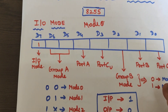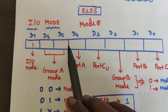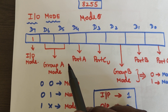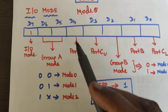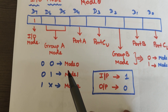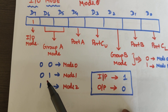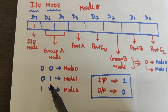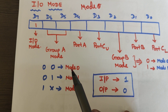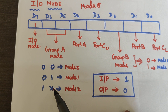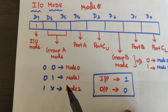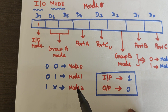D6 and D5 tell you the mode selection for group A. Since it is a 2-bit field, we get four combinations: 00 means mode 0, 01 means mode 1, and 10 or 11 means mode 2.